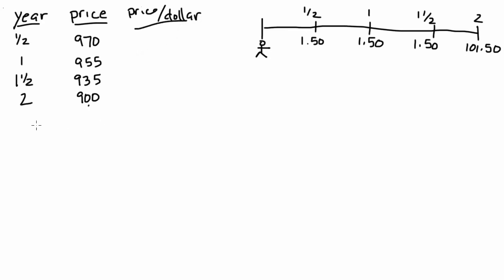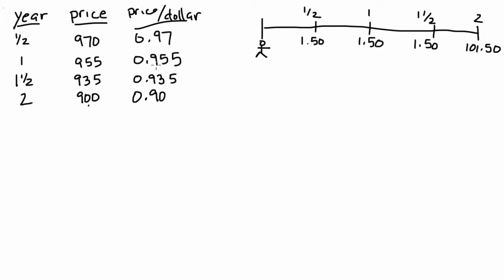So if we are willing to give $900 today to receive $1,000 in the future, this means that we're willing to pay $0.90 for every dollar that we receive in two years. Similarly, we're willing to pay $0.935 today for every $1 that we receive in six months.